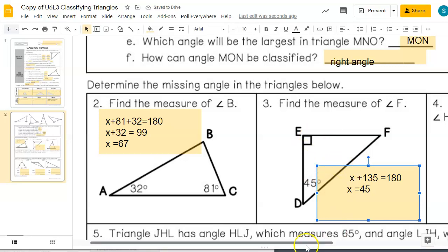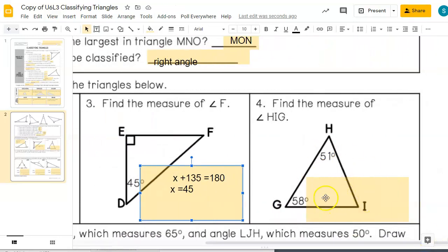Let's do that one more time. These three angles need to add up to 180. So we've got X plus 51 plus 58 equals 180. And that is 109, if I combine those like terms. So I'm going to subtract that, and I'm going to get X equals 71.